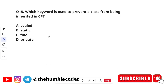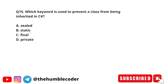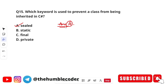Which keyword is used to prevent a class from being inherited in C sharp? The options are: A) sealed, B) static, C) final, and D) private. The correct answer is option A — sealed. The sealed keyword is used to prevent a class from being inherited.